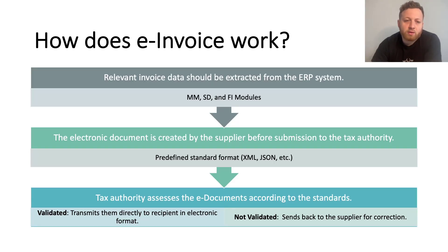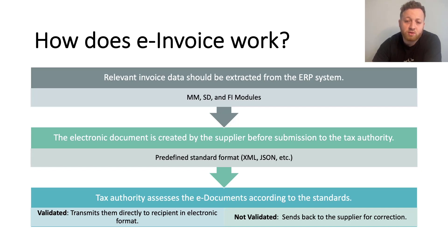How does e-invoice work? This is a constant question we get here at Malasoft. This little graph shows how it works. Relevant invoice data should be extracted from your ERP system, whether that's MM, FI modules. The electronic document is created by the supplier before submission to the tax authorities in a predefined format — it could be XML, JSON, etc. The tax authorities then assess the e-document according to the standards. If validated, it transmits directly to the recipient in electronic format. If not validated, it is sent back to the supplier.